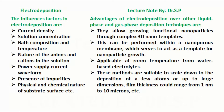Advantages of electrodeposition over other liquid phase and gas phase deposition techniques are: they allow growing functional nanoparticles through complex 3D nanotemplates. This can be performed within a nanoporous membrane, which serves as a template for nanoparticle growth. These methods are applicable at room temperature from water-based electrolytes, and are suitable to scale down to the deposition of a few atoms or up to large dimensions. Film thickness could range from 1 nanometer to 10 microns.